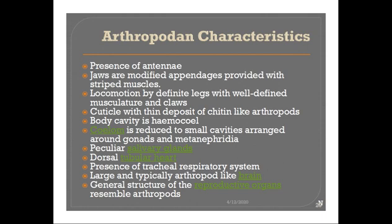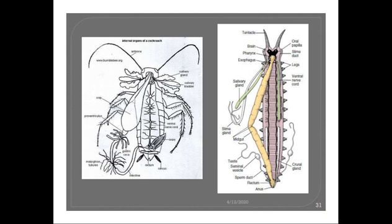The next character is the peculiar salivary gland. In cockroaches and other arthropods, a salivary gland is present — you can see a tube-like salivary gland with a storage bladder. A similar kind of salivary gland is present in Peripatus. You can see the green structure running here — the white one is the slime gland, not the salivary gland; the green one is the salivary gland. This similarity makes Peripatus more related to Arthropoda.